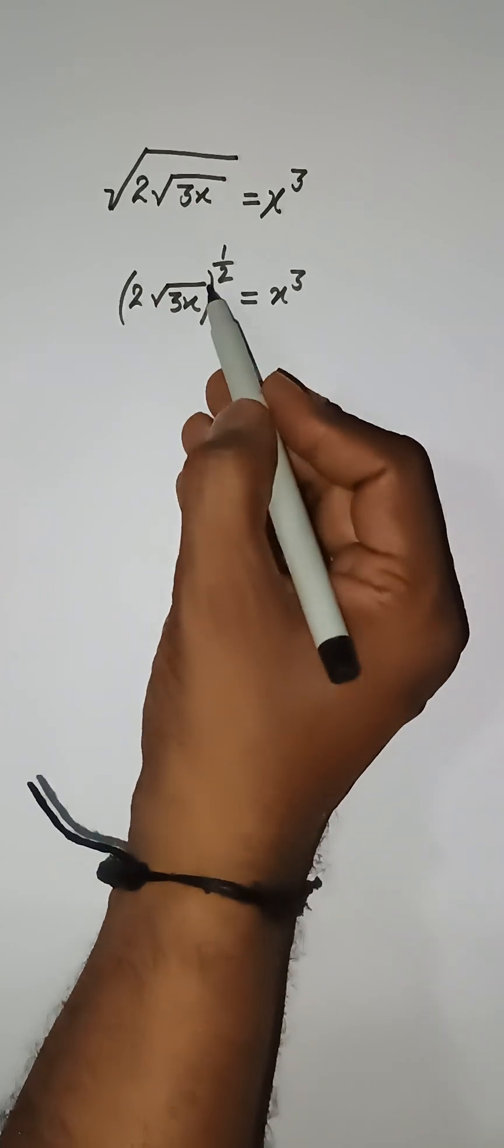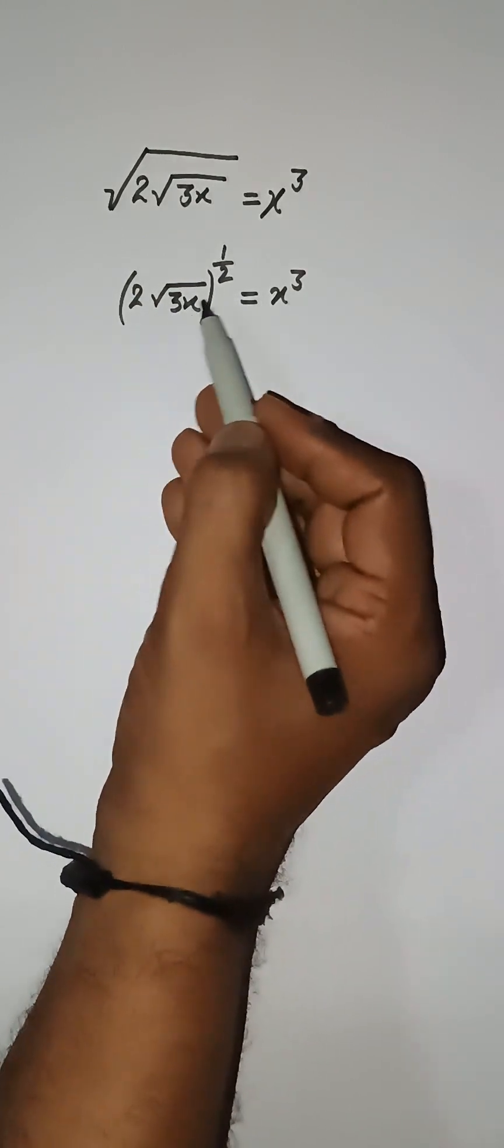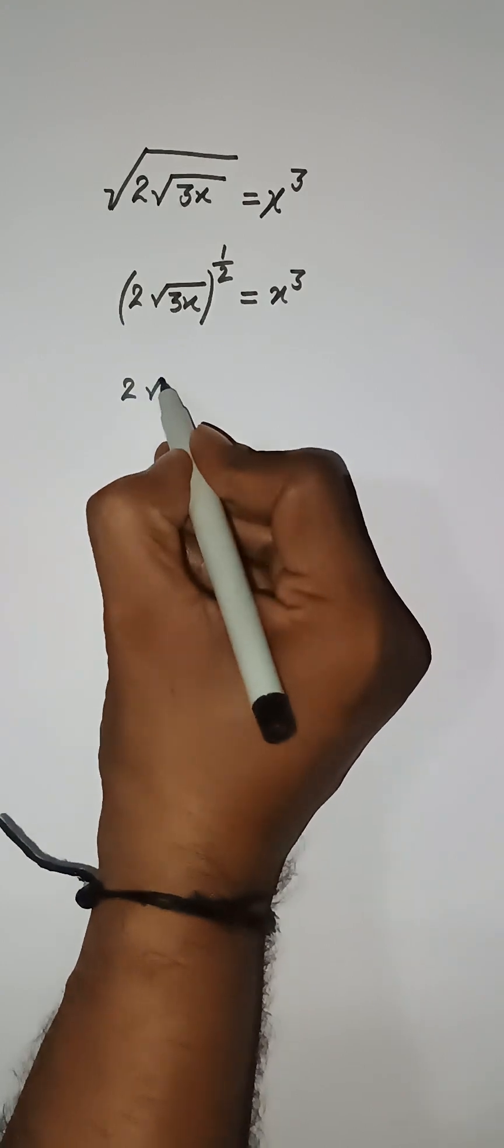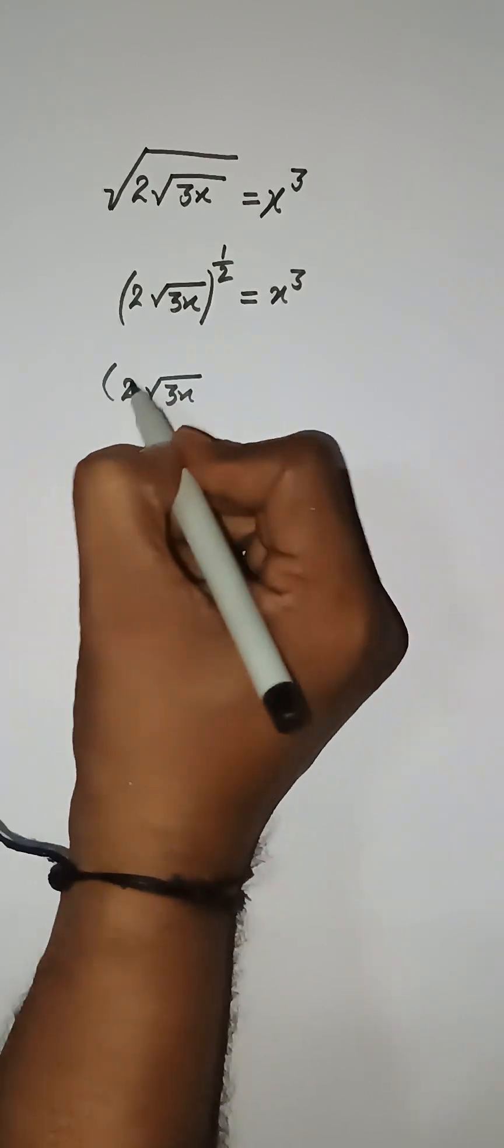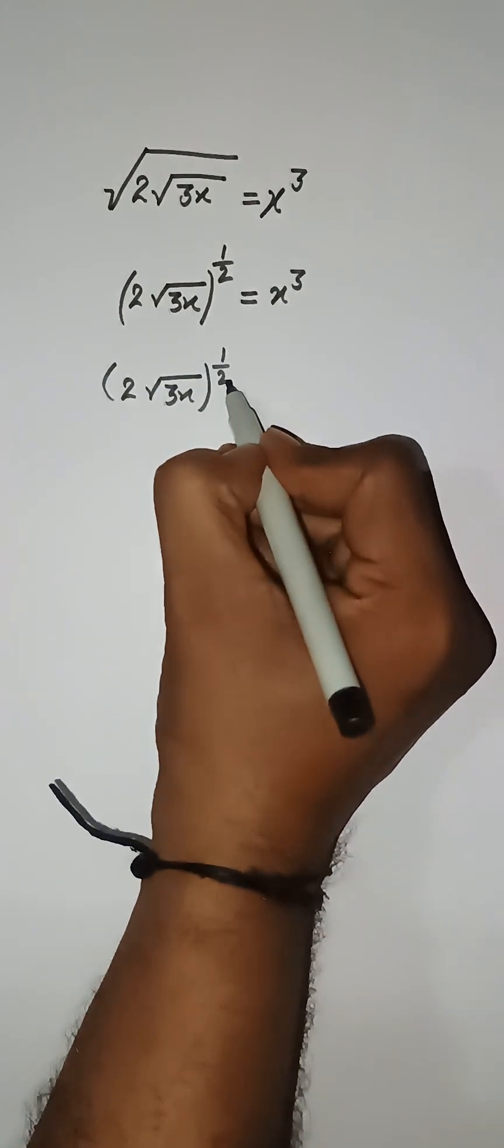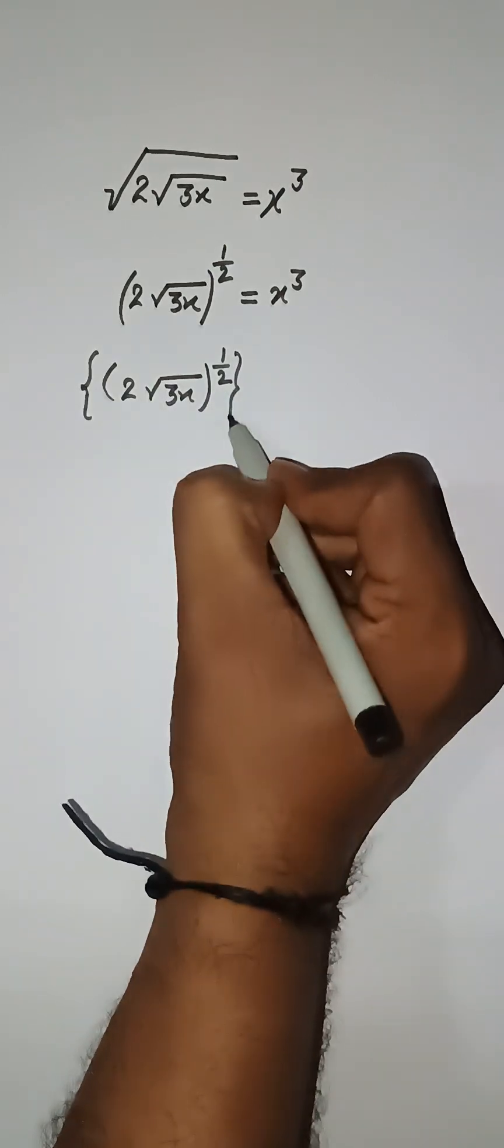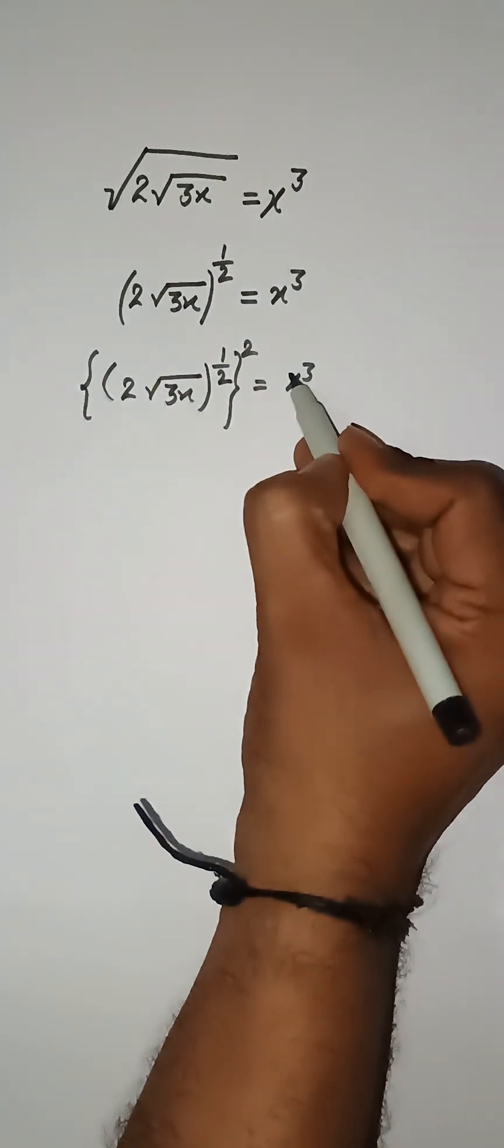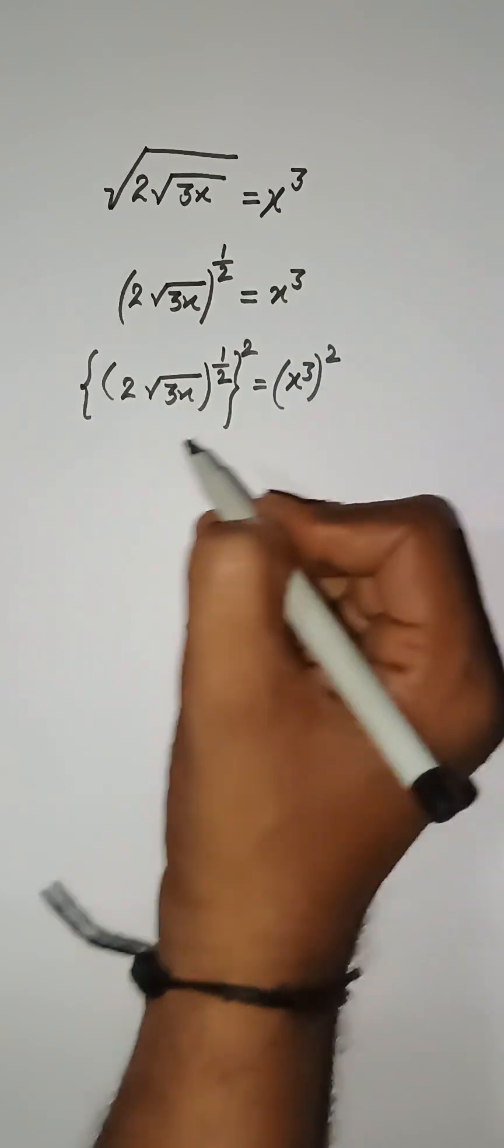Now I need to remove this square root, therefore I am putting a square on both sides. Here 2 cube root of x, power 1/2 as it is, and I am putting square here. I need to put a square on right side also, so I put it.